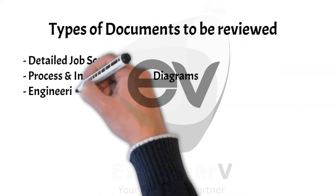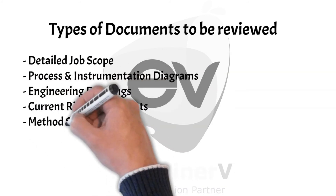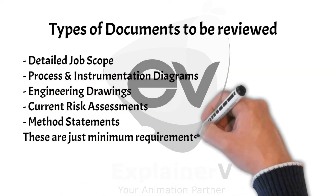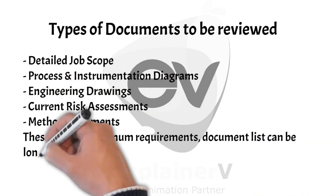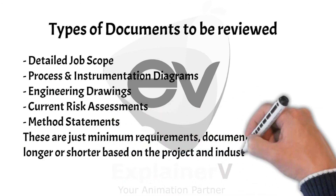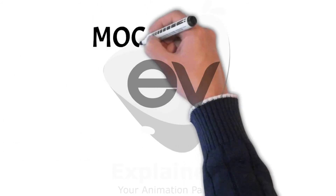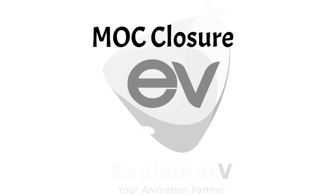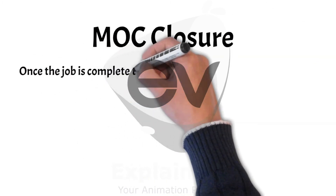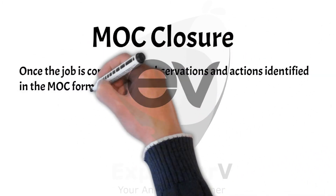The list of documents to be reviewed can be longer or shorter based on the project and the sensitivity of the industry, but the minimum requirement is the detailed scope of proposed change along with appropriate engineering and process drawings, and the detailed job method statement.